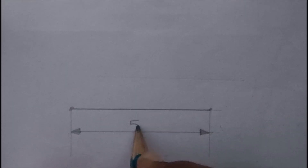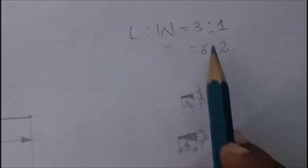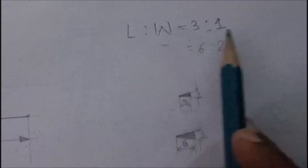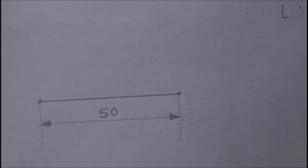Now I am going to give the value as 50 — the value should be above the line. This is how we are going to draw the dimension lines along with the arrowheads. The ratio for the arrowheads can be maintained as 3 is to 1 or 6 is to 2. Hope it is useful for you. Thank you.